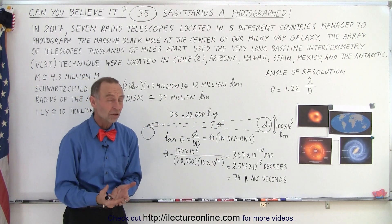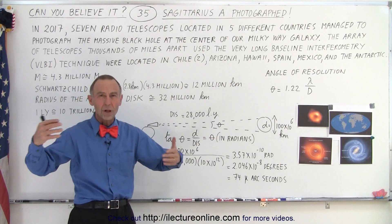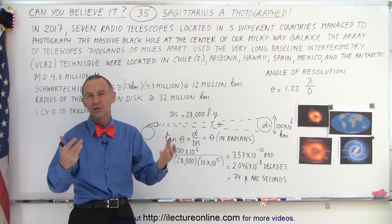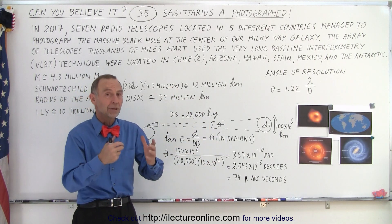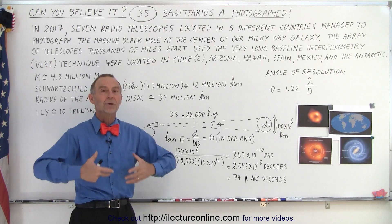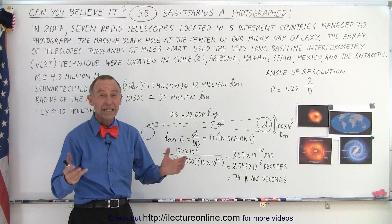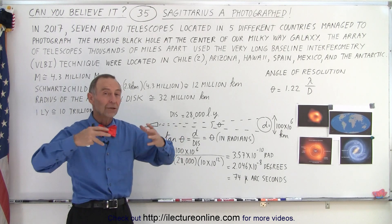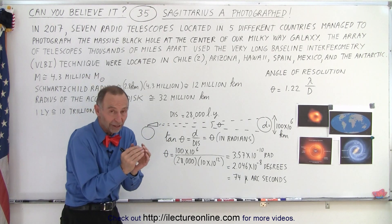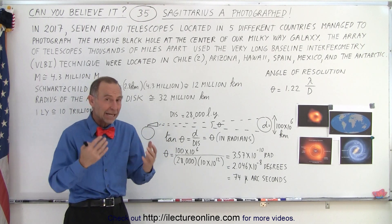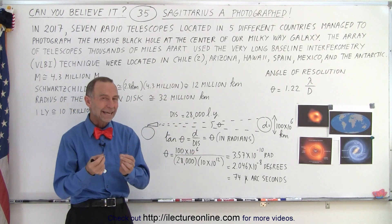Around the black hole, we have the accretion disk. If the black hole is active — meaning it's swallowing up material like hydrogen and helium in the region around it, and potentially a star or a piece of a star — that creates an accretion disk where gases are heated to very high temperatures and begin to glow. That is the part of the black hole you are able to see. The black hole itself does not give off any radiation or light, but the accretion disk around it can be visible.